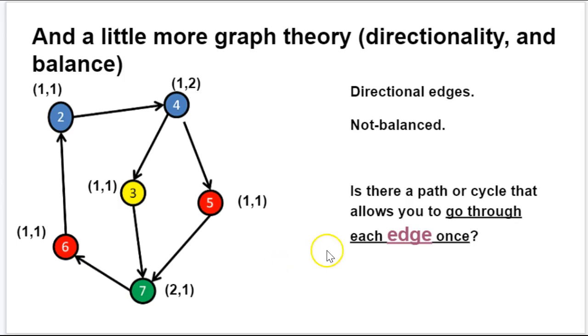So let me ask you this. Is there a path or a cycle that allows you to go through each edge once? And the answer is no. And one of the things that Euler figured out is that if the graph is unbalanced, you can never have an Eulerian cycle. You can only have an Eulerian path if only the first and the last nodes are unbalanced. But this is just a little bit of graph theory for you.